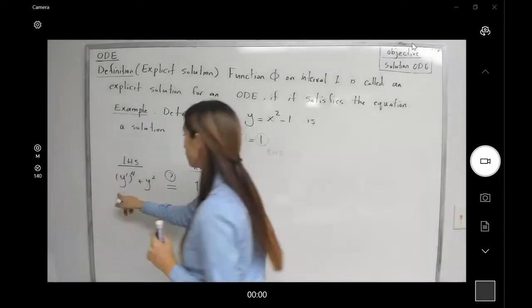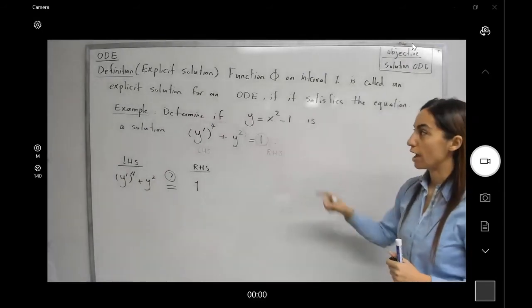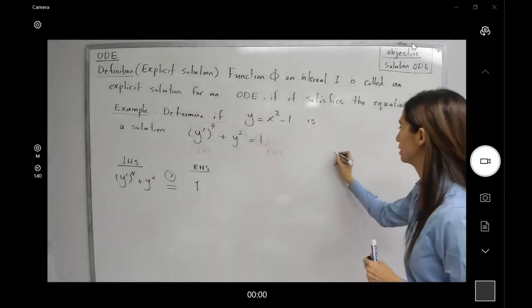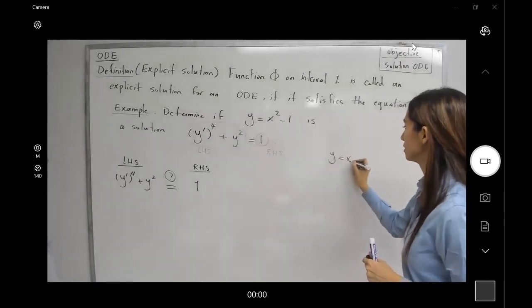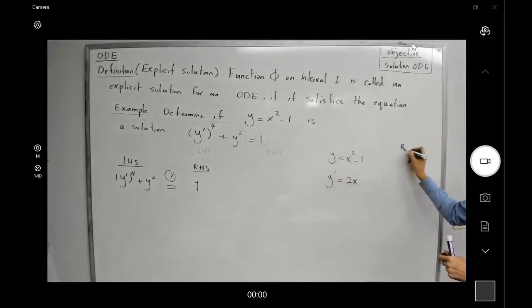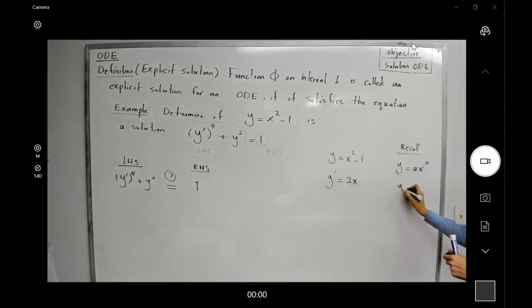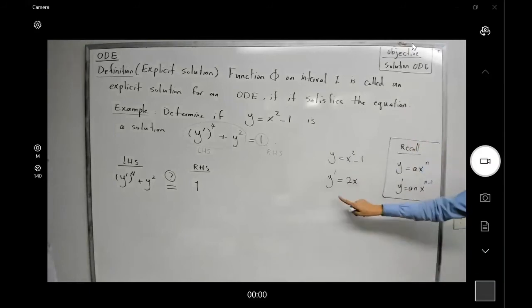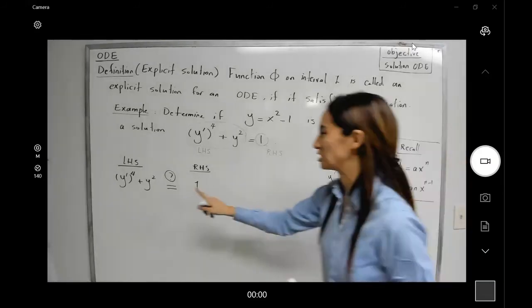So what do we need? We need to find the derivative of x² - 1. Y is x² - 1, so y' is 2x. Recall that in elementary calculus, if you have y = ax^n, the derivative is anx^(n-1). So y' = 2x. Let us substitute that here.